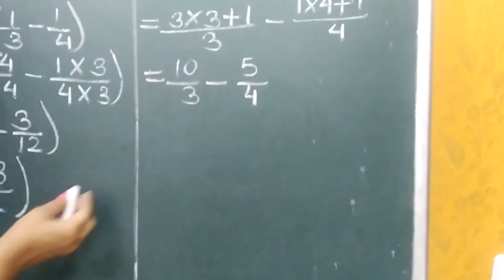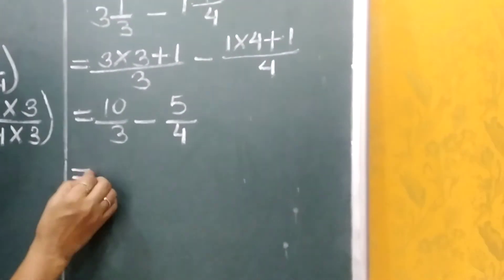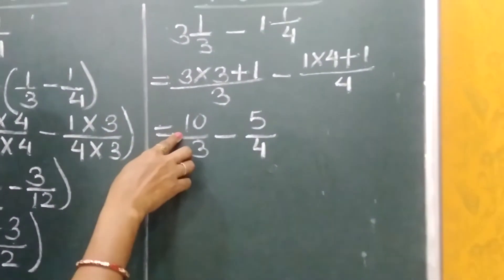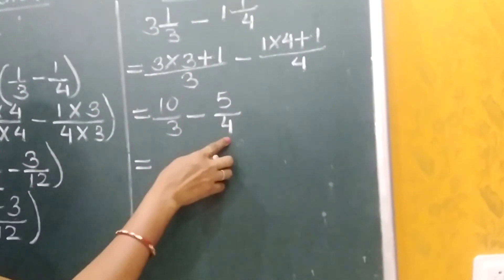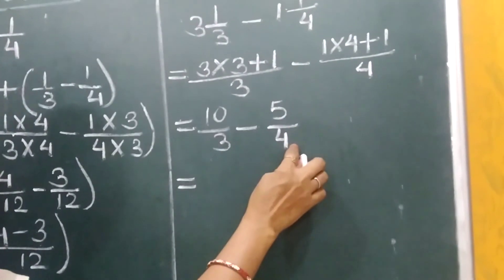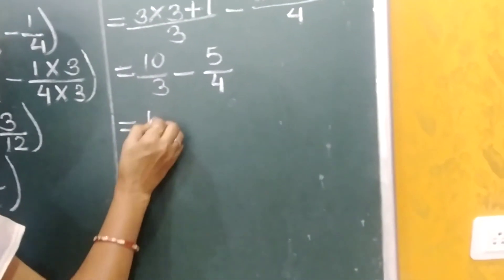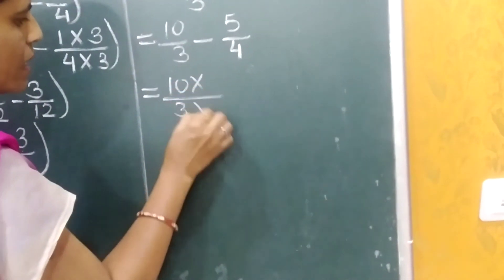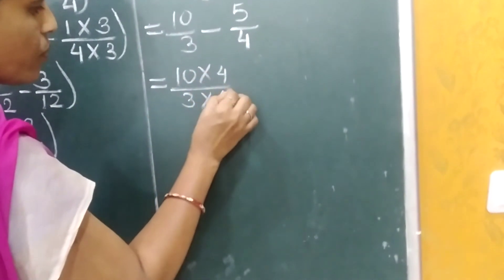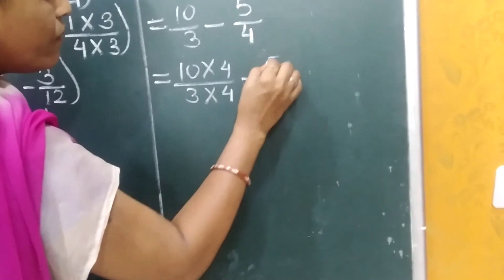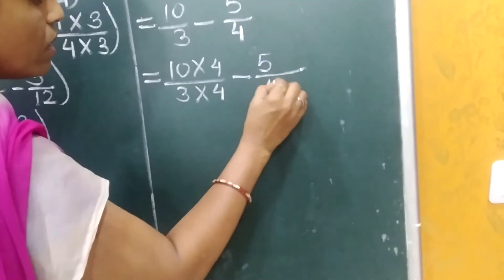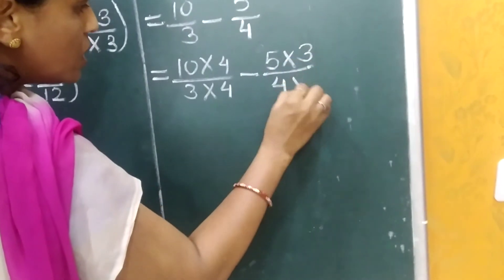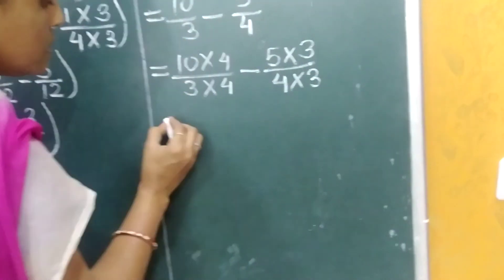Now here the denominator is different. We have to make the denominator same. For this we will multiply 10 upon 3 by 4 and 5 upon 4 by 3. So 10 upon 3 multiplied by 4 and 5 upon 4 we will multiply it by 3.